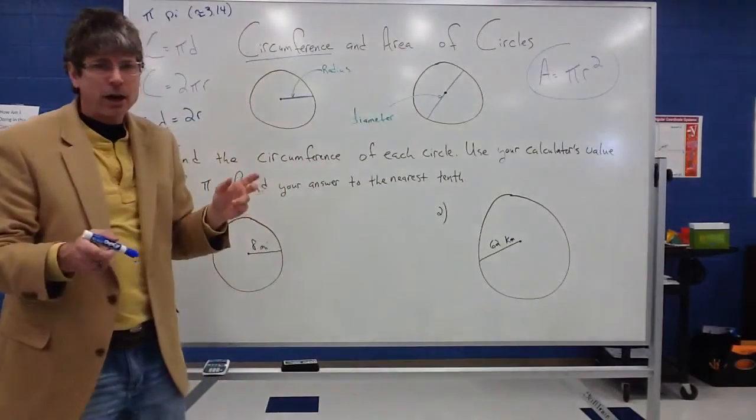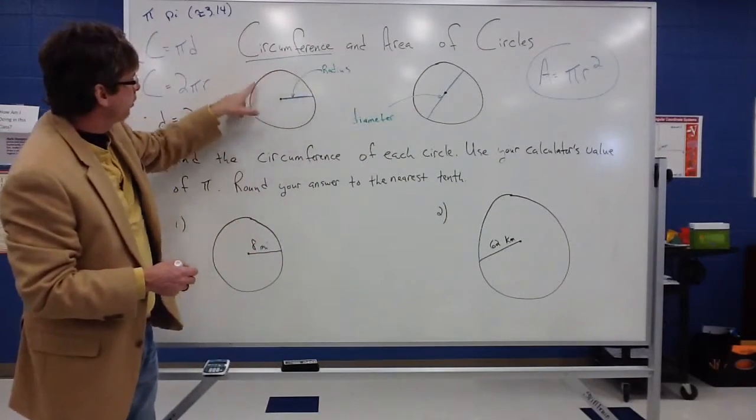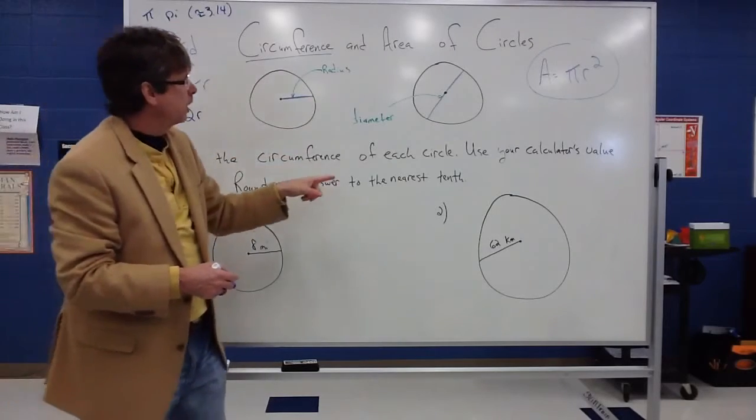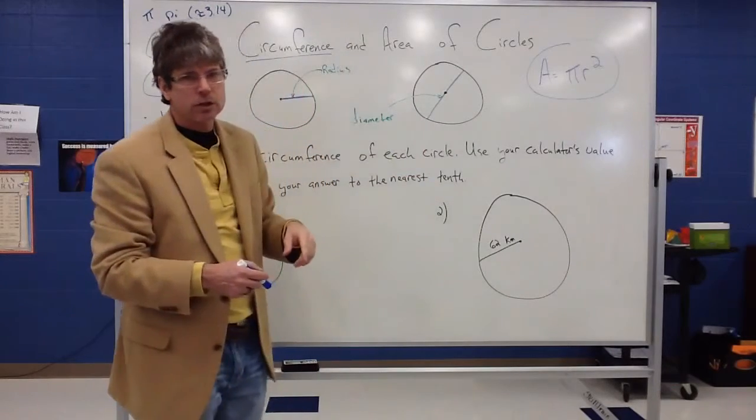Remember, circumference and area are not the same thing. The circumference was the distance around a circle. Meanwhile, the area was how many squares are inside the circle. A little bit different concept.